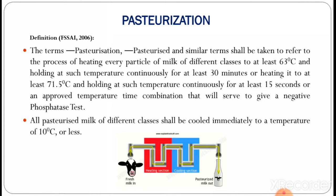Before going to study the types of pasteurization, we will first discuss the definition. According to the FSSAI — Food Safety and Standards Authority of India — the term pasteurization shall refer to the process of heating every particle of milk to at least 63°C and holding continuously for at least 30 minutes, or heating to at least 71.5°C and holding for at least 15 seconds, or an approved temperature-time combination that will give a negative phosphatase test. All pasteurized milk shall be cooled immediately to 10°C or less.